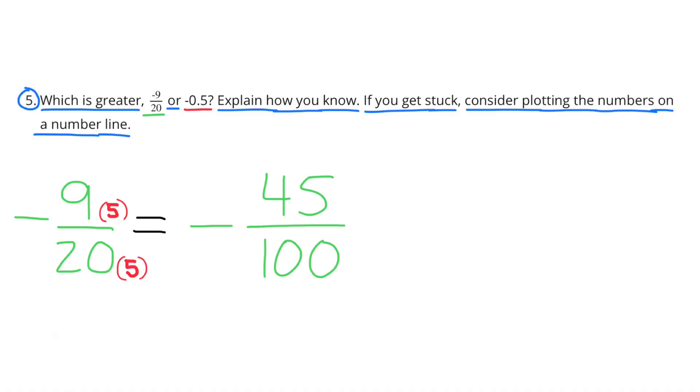Number 5. Which is greater, negative 9 over 20, or negative 5 tenths? Explain how you know. If you get stuck, consider plotting the numbers on a number line.